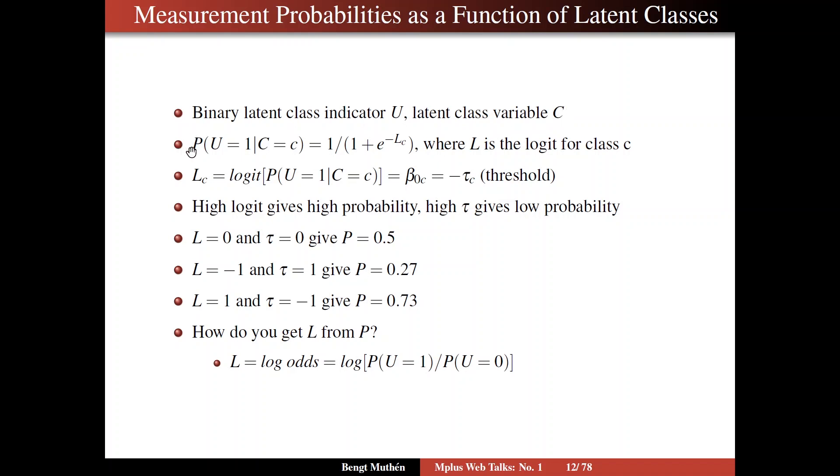The probability that you have u equals 1 when the latent class variable is in class c, lowercase c, is the logistic expression, where L is the logit for class c. And so the logit of this probability expression is log of the odds. And in the latent transition, or latent class analysis setting, there are no x2 variables, no continuous variables, but only an intercept, beta 0, which varies across the latent classes.